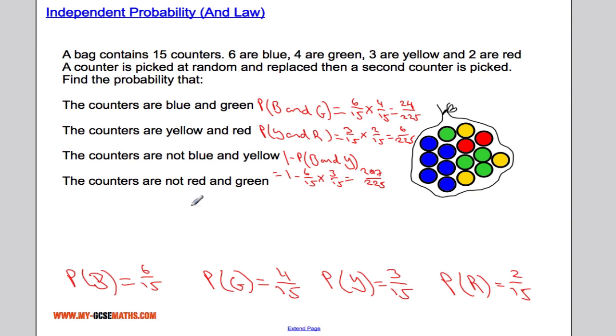Finally, for the counters not being red and green, that's 1 minus the probability that they are red and green. So 1 minus 2 out of 15 multiplied by 4 out of 15, which equals 1 minus 8 out of 225, giving us 217 out of 225.